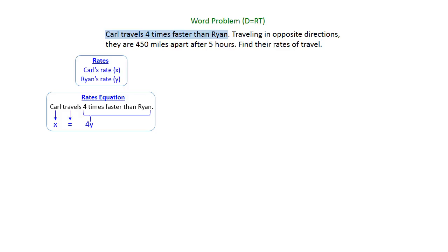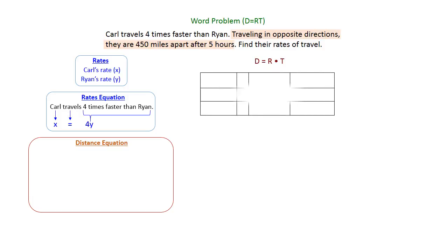Now that we have a rates equation, we just need a second equation so we have a system we can solve. Let's look at the second sentence: traveling in opposite directions, they are 450 miles apart after five hours. They're giving us distance information here, so we're going to put together a distance equation. That's always easiest if you think about your values in a table.